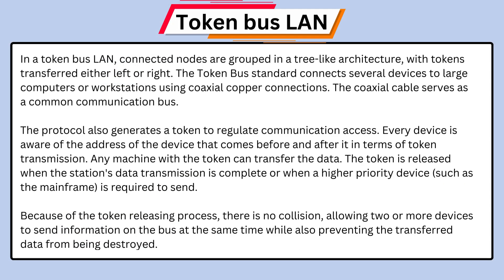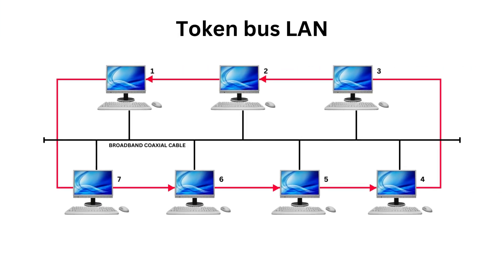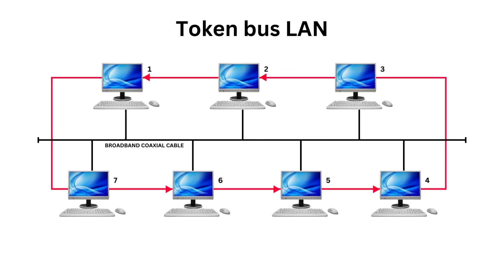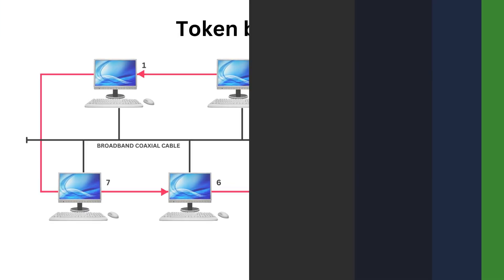In a token bus LAN, connected nodes are grouped in a tree-like architecture, with tokens transferred either left or right. The token bus standard connects several devices to large computers or workstations using coaxial copper connections.